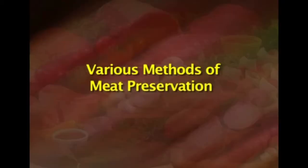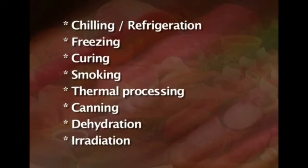After examining spoilage, it is very important to learn about various methods of meat preservation. Meat is a highly perishable commodity due to its nearly neutral pH and high moisture content, which is rich in nutrients. Various methods employed to prolong the shelf life of meat are chilling, refrigeration, freezing, curing, smoking, thermal processing, canning, dehydration and irradiation.